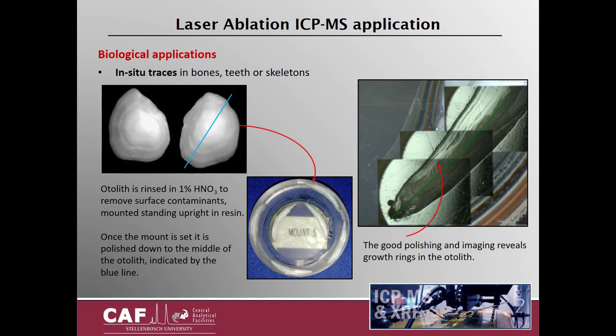For the otolith analysis, we rinsed the sample in 1% nitric acid to remove any surface contaminants. Then we mounted it standing upright in the resin. Once the mount is set, it is polished down to the middle of the otolith, which is indicated by this blue line. Good polishing and imaging reveals growth rings in the otolith. Spots can then be made along the line indicated here in green, or even a continuous line can be ablated to monitor differences over very high resolution.